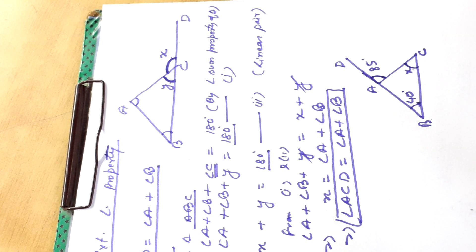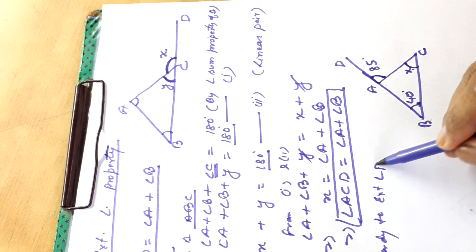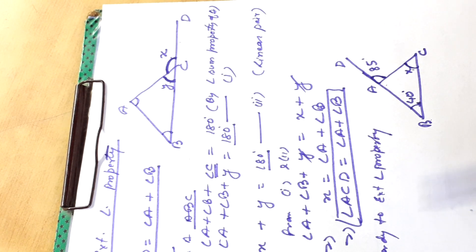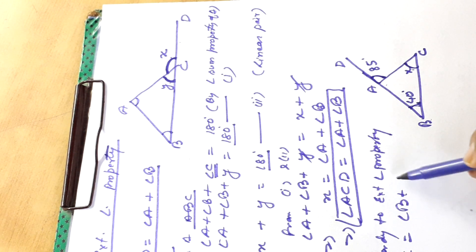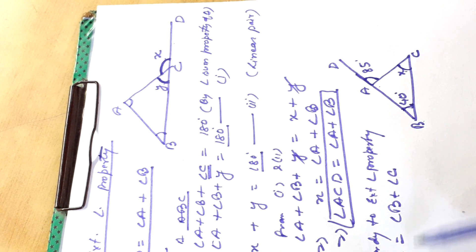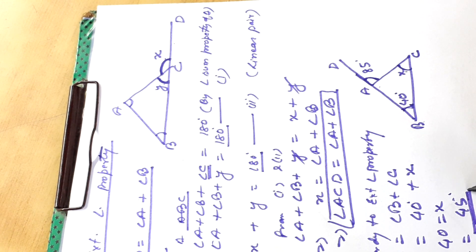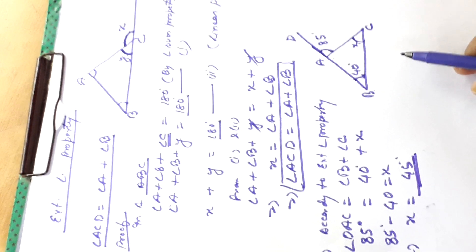According to the exterior angle property, angle DAC is equal to angle B plus angle C. Putting the values, 85 degrees equals 40 plus x. Transferring 40 to the other side, we get 85 minus 40 equals x. Therefore x is equal to 45 degrees. In this way we can use the exterior angle property to solve problems.